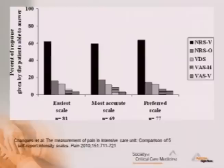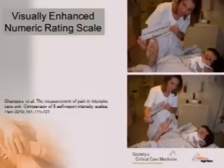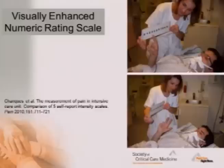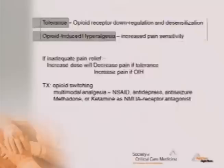They looked at ease of use and accuracy, and showed psychometric properties of each scale. I'm a visual learner — I like looking at that. The visually enhanced numeric scale is one example — the patient can point or put up fingers. For the visual analog scale, I placed the scale in front of the patient and slowly moved my finger until they blinked to indicate their level.